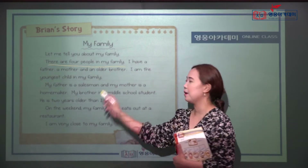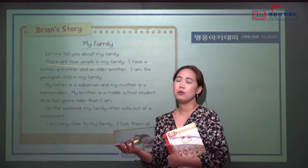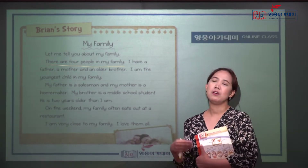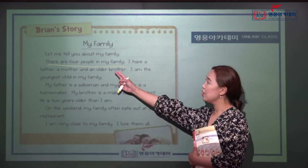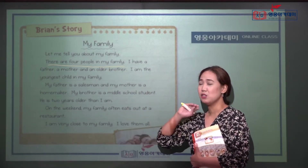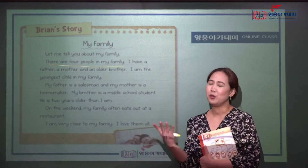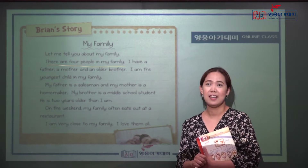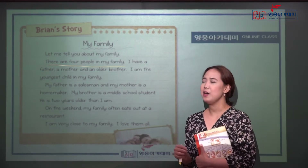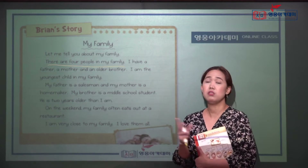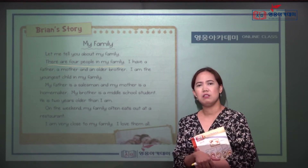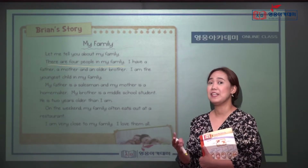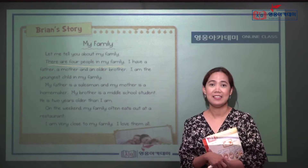There are four people in my family. When someone asks how many members are in your family, use this complete sentence to answer: 'There are four people in my family' or 'There are three people in my family.' Don't just say one, two, three, four — always try to answer in a complete sentence.